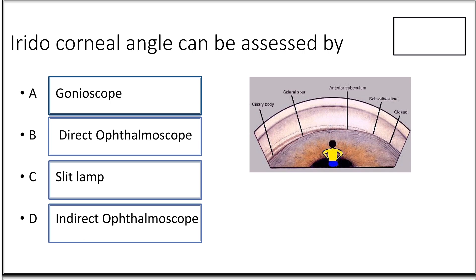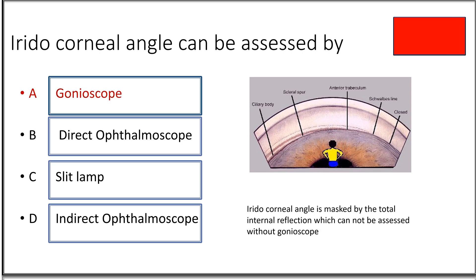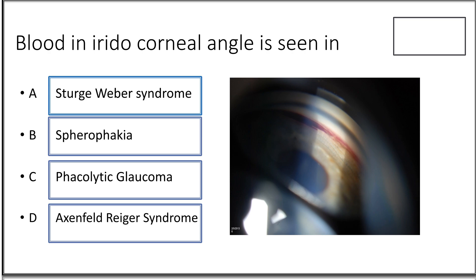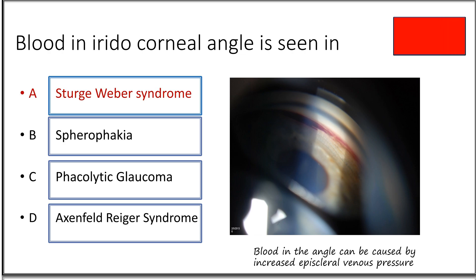Eighteenth question: the iridocorneal angle can be assessed by — gonioscope, direct ophthalmoscope, slit lamp, or indirect ophthalmoscope? It is best viewed by the gonioscope; it cannot be assessed by the other techniques. Blood in the iridocorneal angle is seen in Sturge-Weber syndrome — in this condition, blood can be seen in the angle because of increased episcleral venous pressure when gonioscopy is performed. This is a classic finding of Sturge-Weber syndrome.